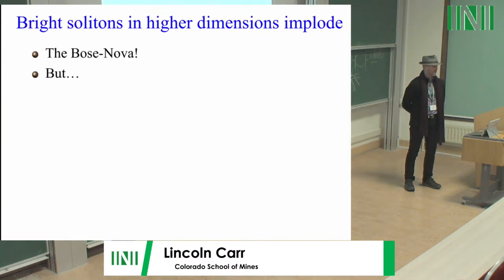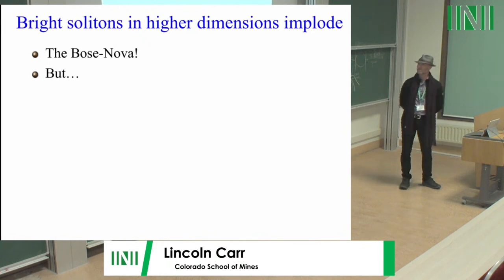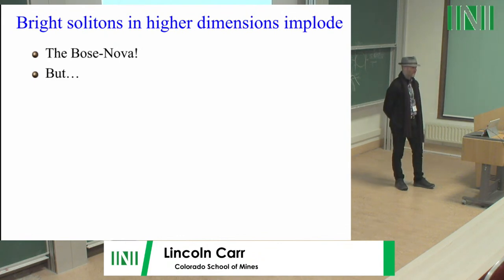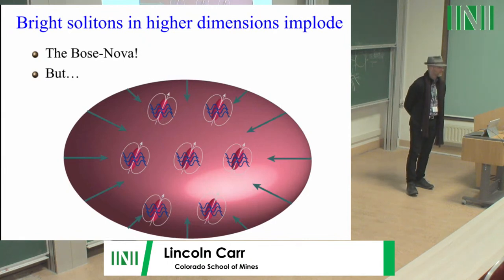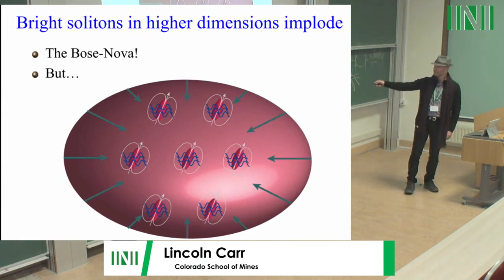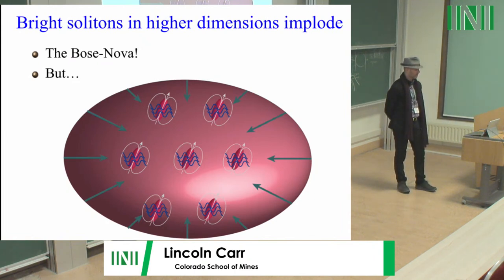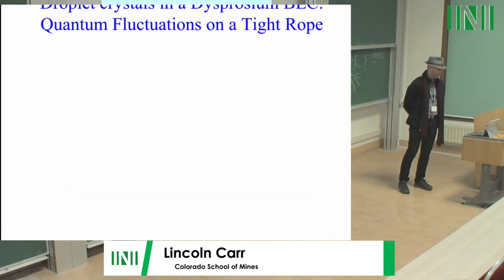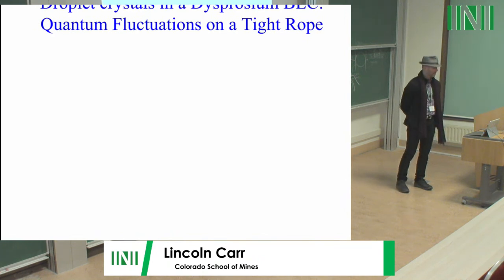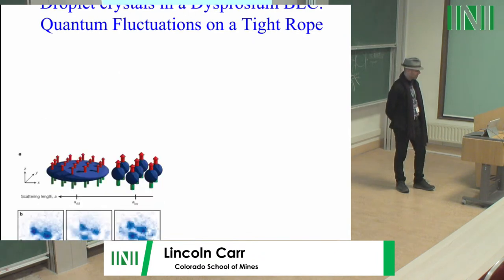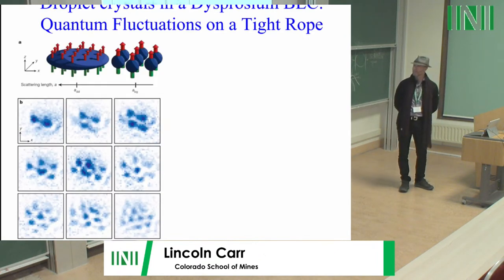Bright solitons in higher dimensions in general implode — I think we all know this as mathematicians. For Bose condensates, this gets called the Bose nova. It happens that you can stop this implosion with dipole-dipole interactions. I have a viewpoint from 2016 where this was first accomplished. Dipole-dipole interactions will stabilize bright solitons in higher dimensions; it's nothing more than a non-local nonlinear Schrödinger equation. It goes under the name of droplet crystals, for example in dysprosium BECs. Here's the original description from an observation from 2016 — you get a lattice or pattern formation of droplets that makes this crystal.